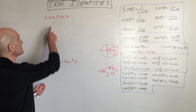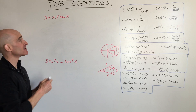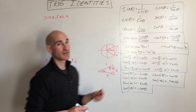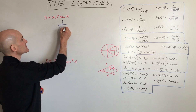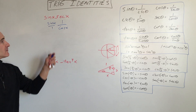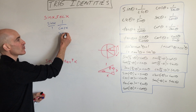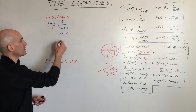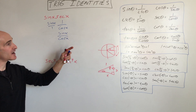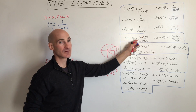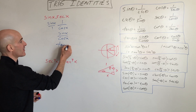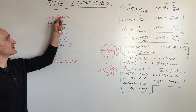Here we have sine x times secant x. Secant of x is 1 over cosine, so we write it as 1 over cosine x. Sine of x is sine over 1, and when we multiply the numerators and denominators — just like working with fractions in algebra — we get sine over cosine, which we know is tangent. So this simplifies to tangent of x.